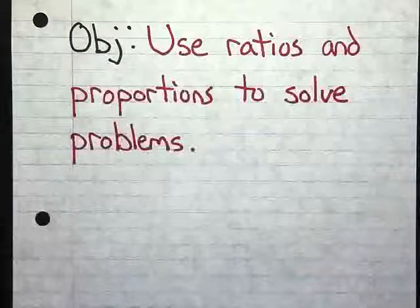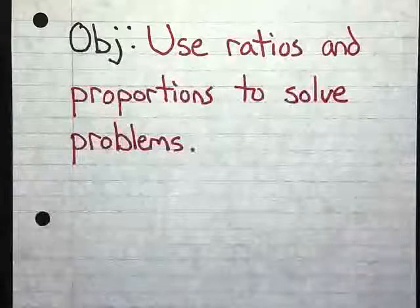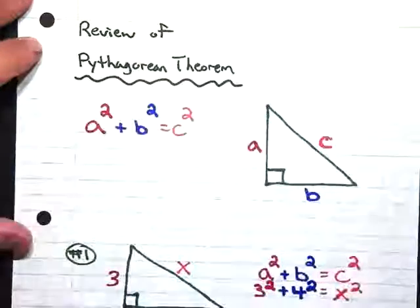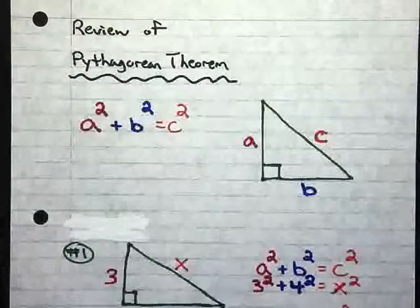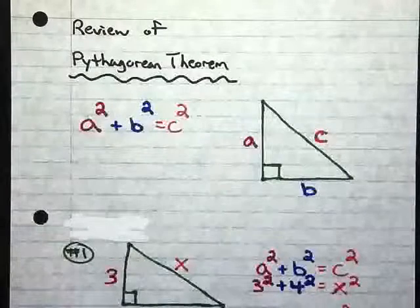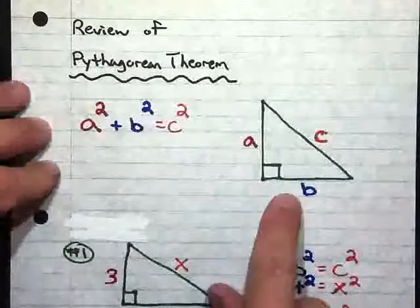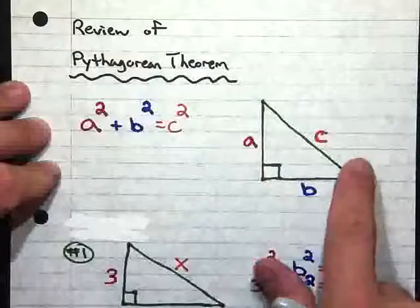Before we really begin on this though, we need to do a quick review of Pythagorean's Theorem. Remember, Pythagorean's Theorem is something that we use on a right triangle. And you can see here that I have my right triangle with sides A, B, and C.